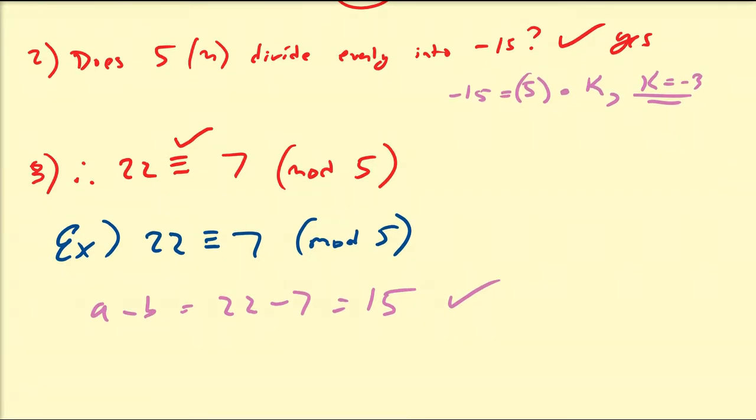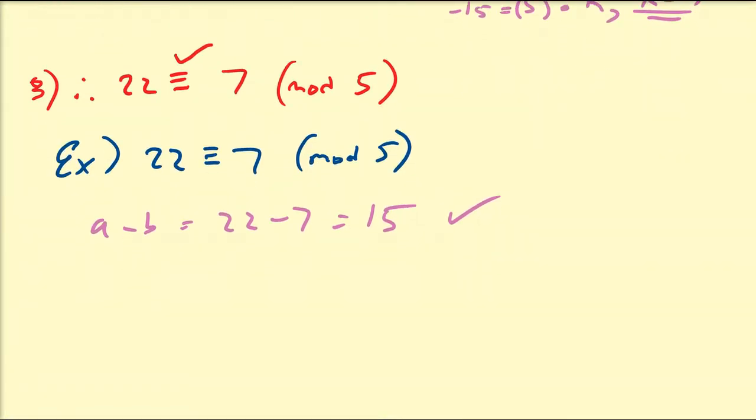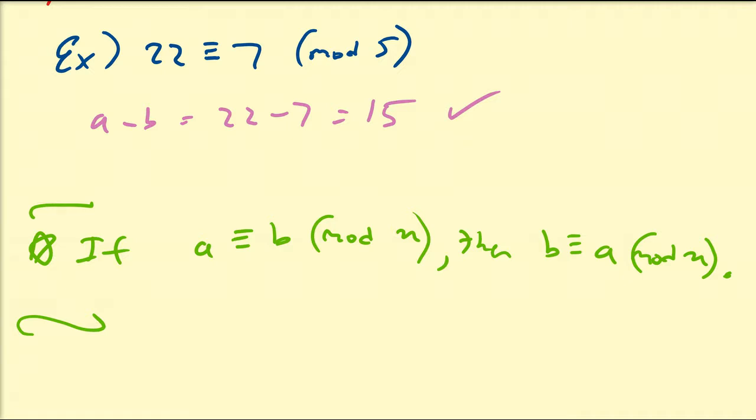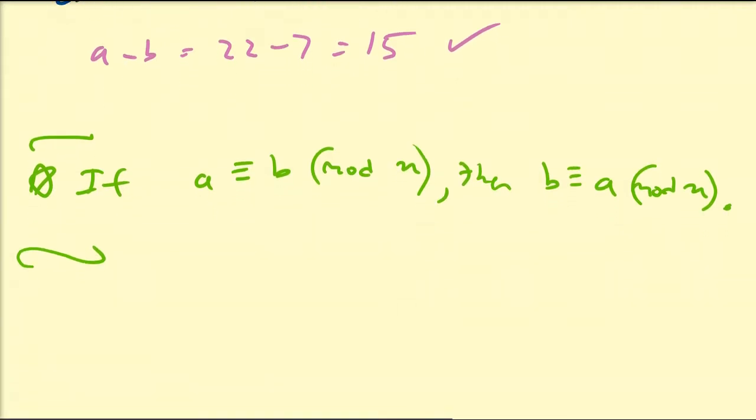So we can easily generate the theorem that if a is congruent to b modulo n, then b is congruent to a modulo n. And that's a very easy proof because the integer factor is just going to be the opposite of the other approach. So that would be an easy proof to generate. So let's look at another example.